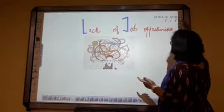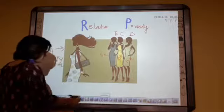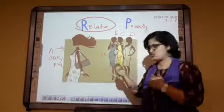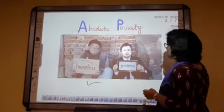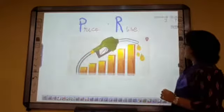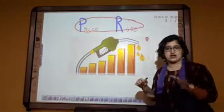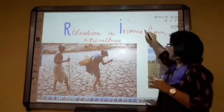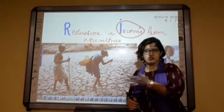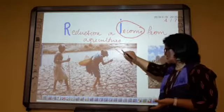Let's move forward to revision. Relative poverty means competition between different income groups. Absolute poverty means not being able to afford basic necessities. Reasons for poverty: price rise is a major reason. Next is reduction in income from the agricultural sector, which is completely neglected because of more and more capital-intensive industries, with growth of industries and services being focused upon instead.